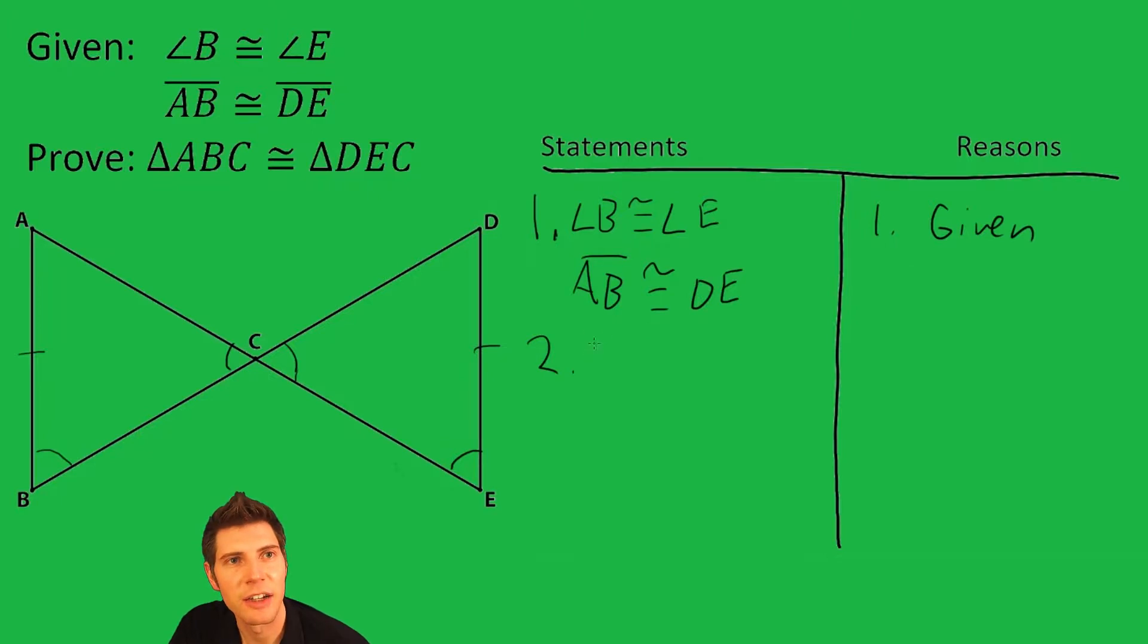So let's list that angle ACB is congruent to angle DCE. Reason for that is vertical angles.